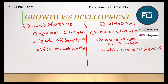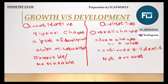Growth is completely measurable and observable — we can observe it and we can also measure it accurately. But development is different. Since it is a qualitative change, when we talk about quantitative measurement of development, we cannot say it is fully accurate. We can only provide approximate values — development is approximately measurable.